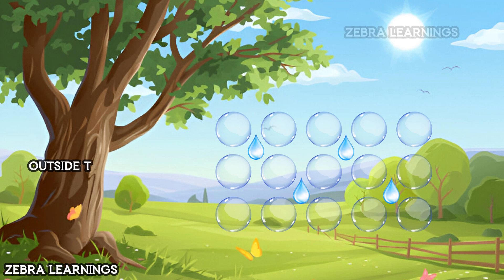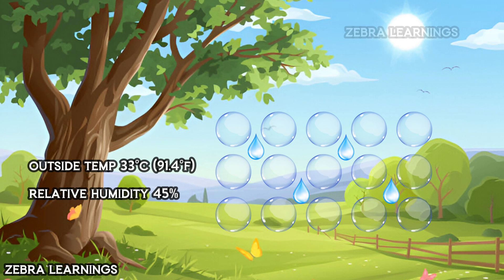Let's say the outside temperature is 33 degrees Celsius and the relative humidity is 45%. In this case, the dew point temperature is 19.5 degrees Celsius. Therefore, when the outside air temperature is 33 degrees Celsius and the relative humidity is 45%, the corresponding dew point temperature is 19.5 degrees Celsius.